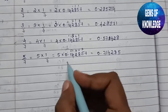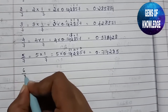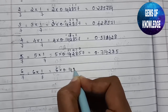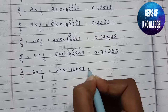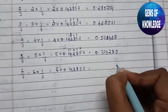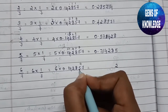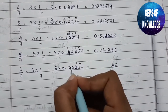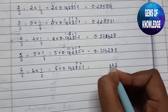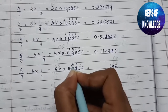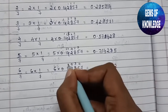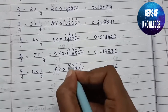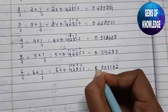Finally, 6/7 = 6 × (1/7) = 6 × 0.142857. Multiplying: 6×7=42, write 2 carry 4; 6×5=30+4=34, write 4 carry 3; 6×8=48+3=51, write 1 carry 5; 6×2=12+5=17, write 7 carry 1; 6×4=24+1=25, write 5 carry 2; 6×1=6+2=8. So 6/7 = 0.857142.